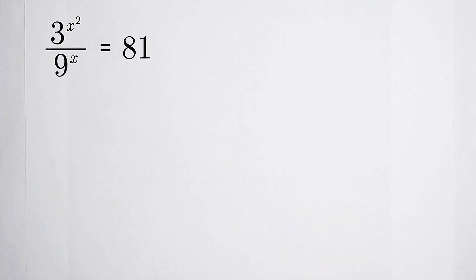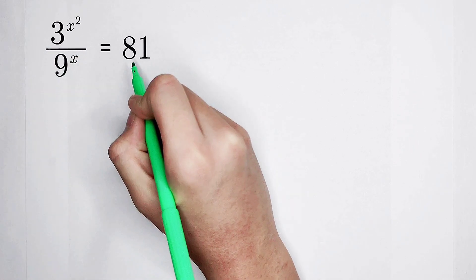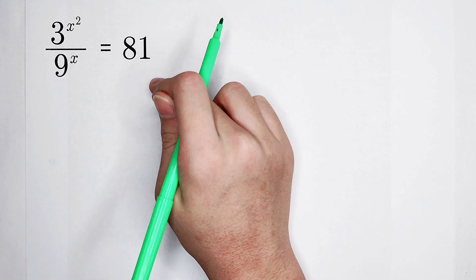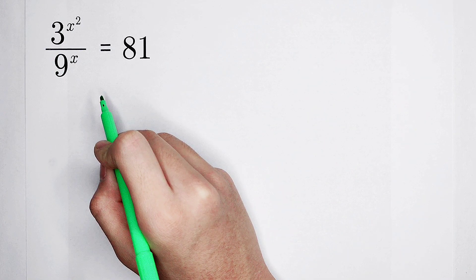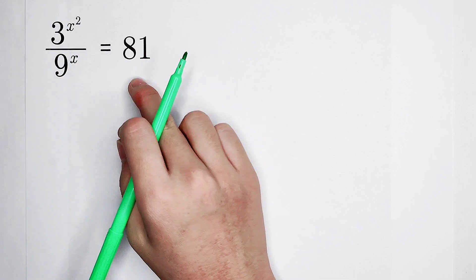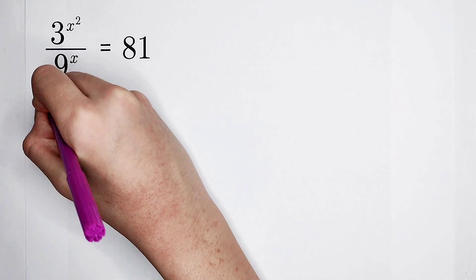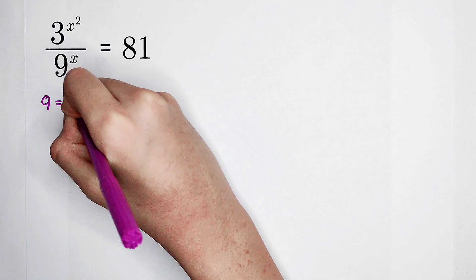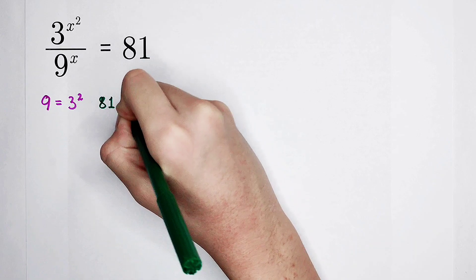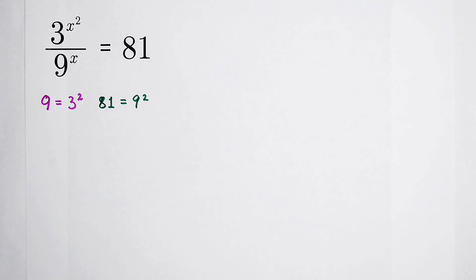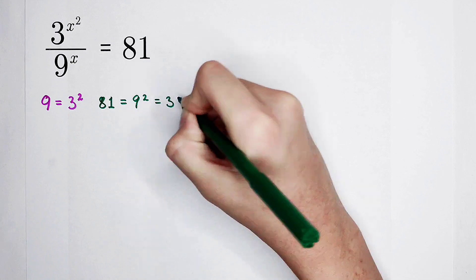First, what should you do? By observation, take a look at the bases: 3, 9, and 81. Are there any relationships among them? Of course there are. 9 is 3 squared, and 81 is 9 squared. Since 9 is 3 squared, 81 is 3 squared all squared, which is 3 to the power of 4.